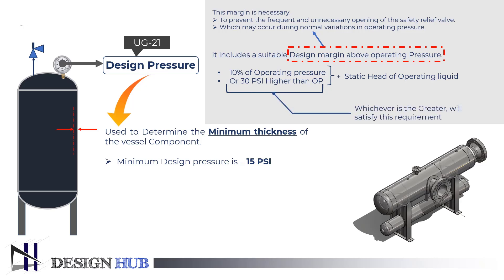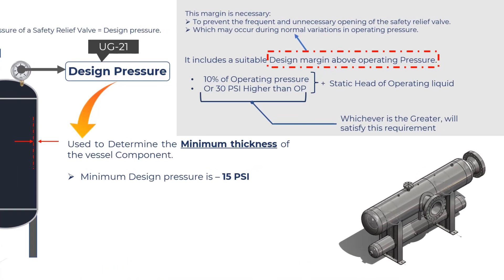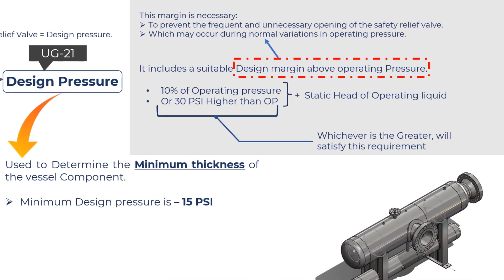The maximum working pressure generally increases with some margin to accommodate the expected pressure surge. These margins are necessary to prevent the frequent and unnecessary opening of the safety relief valve, which may occur during normal variations in operating pressure.